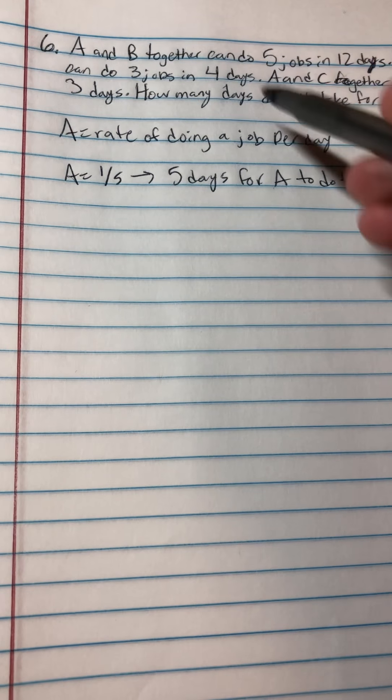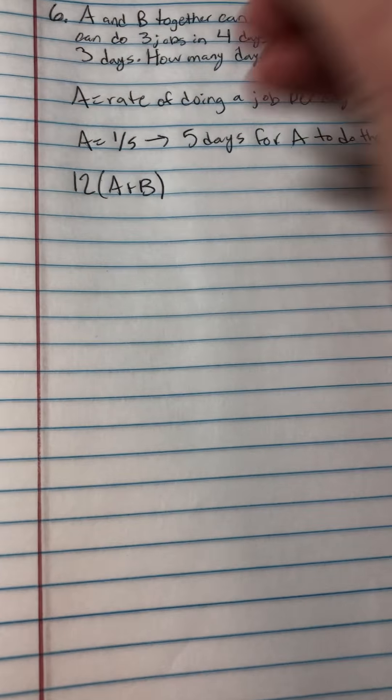So first of all, I made 3 equations involving A and B, B and C, and A and C. So I started off with 12, which is 12 days times A plus B, because the rates are adding together since they're both doing a job, and they get 5 jobs done.